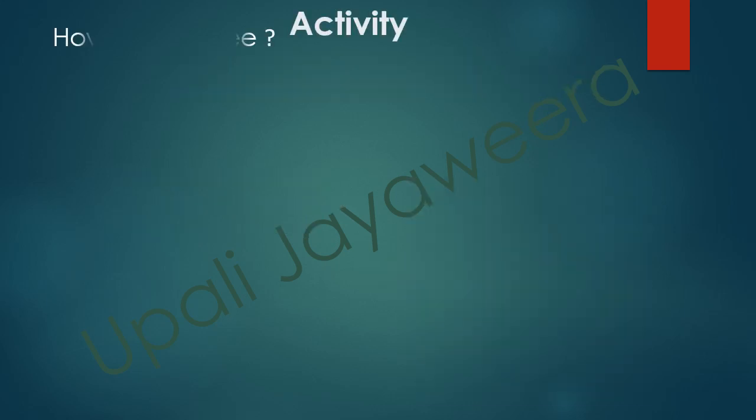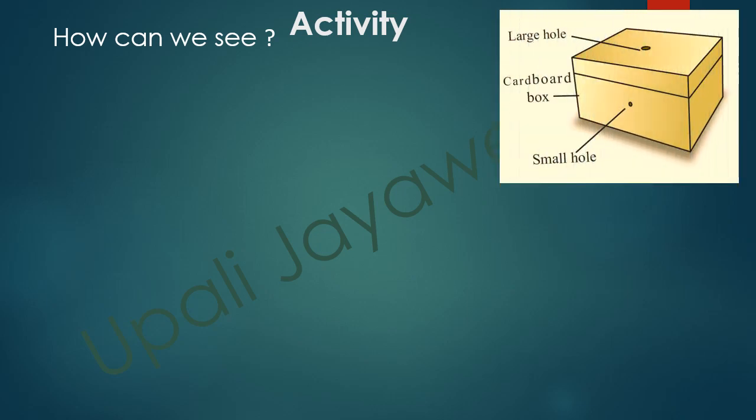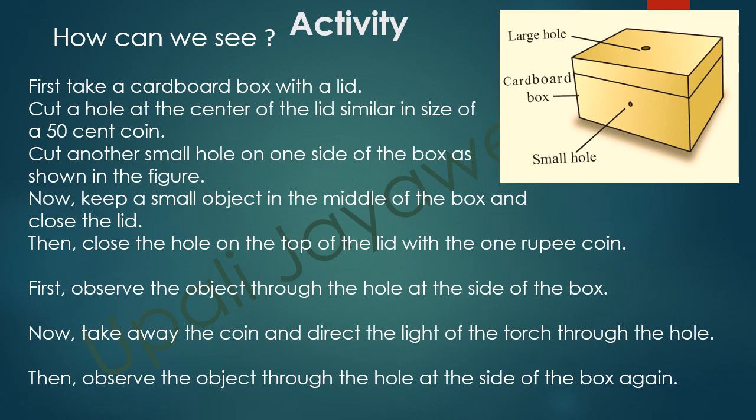Now we'll do this activity to find out how we can see. First, take a cardboard box with a lid. Then cut a hole at the center of the lid similar in size to a 50 cent coin. Cut another small hole on one side of the box as shown in the figure. Now keep a small object in the middle of the box and close the lid. Then close the hole on the top of the lid with a 1 rupee coin.